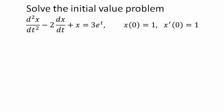Let's solve the following initial value problem using Laplace transforms. We have the second derivative of x with respect to t minus 2 times the first derivative of x with respect to t plus x equals 3e^t, with initial conditions x(0) = 1 and x'(0) = 1.